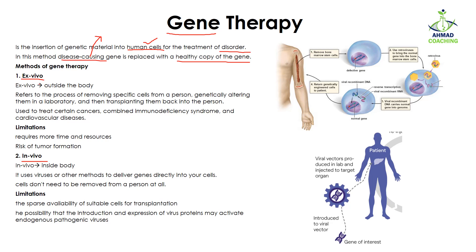Ex vivo means outside the body — 'ex' means outside. This refers to the process of removing specific cells from a person, then genetically altering them in the laboratory. Because we are removing the cells and studying them outside the body, we call it ex vivo. We alter the genetic makeup in the laboratory and then transplant them back into the person.